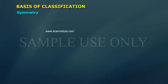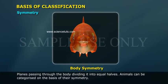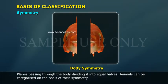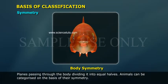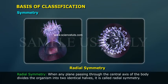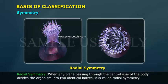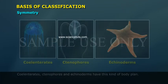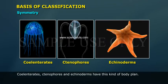Symmetry refers to planes passing through the body, dividing it into equal halves. Animals can be categorized on the basis of their symmetry. Sponges are mostly asymmetrical — any plane passing through the center does not divide them into equal halves. Radial symmetry is when any plane passing through the central axis of the body divides the organism into two identical halves. Cnidarians, ctenophores, and echinoderms have this kind of body plan.